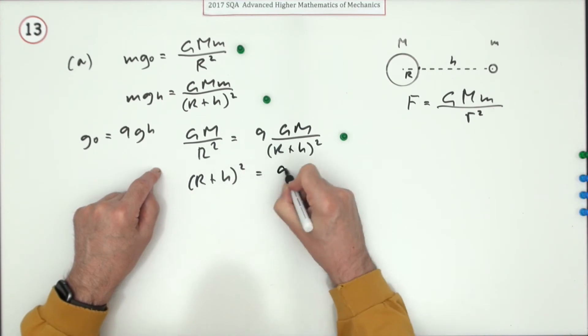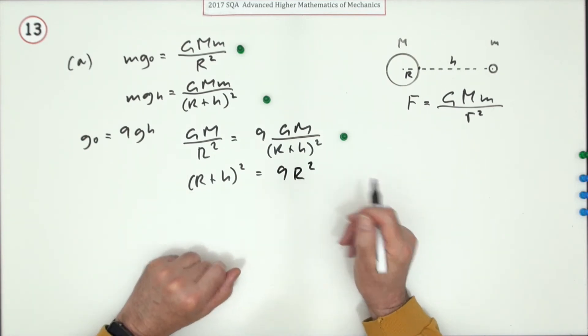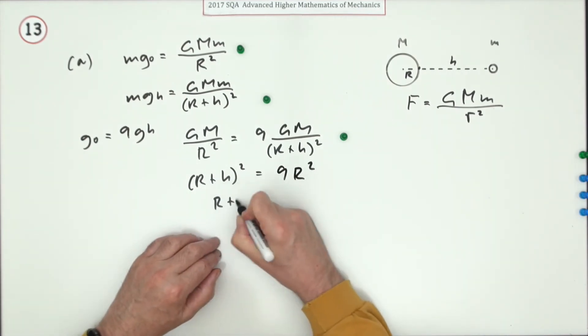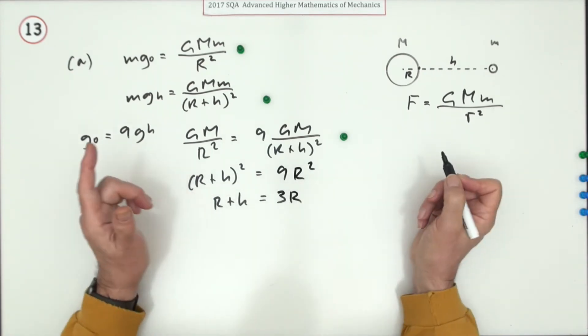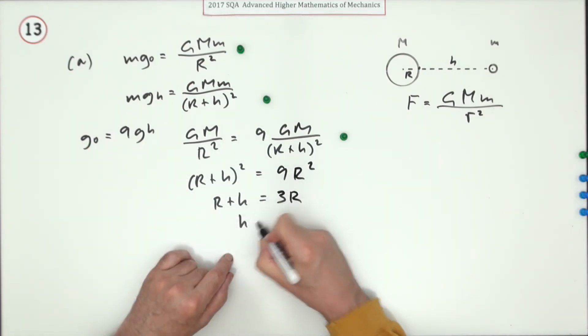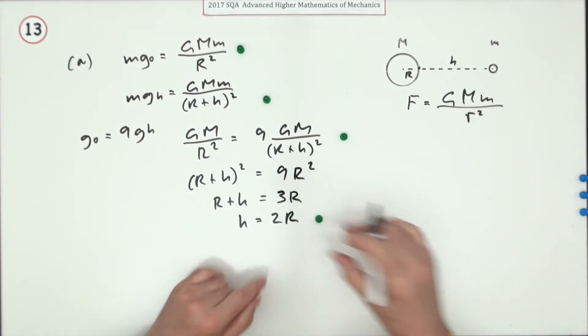The GM's of course cancelling, you're almost there. r+h will be the square root of that, which will be 3r, which has to be positive. And finally h is going to be, take that r across and subtract, you've got 2r. There's the fourth mark.